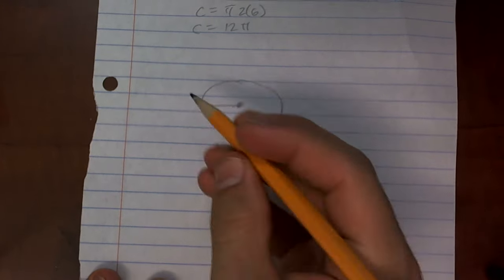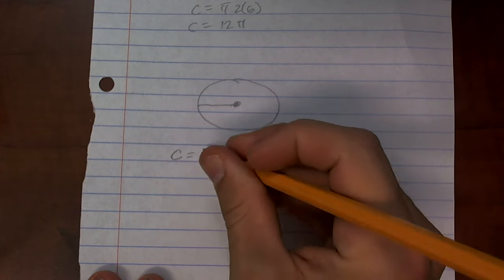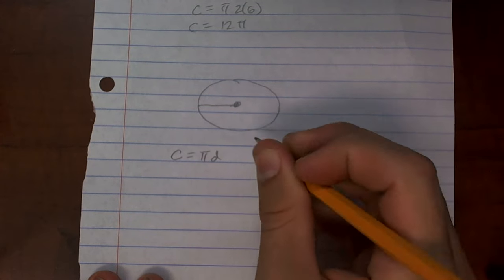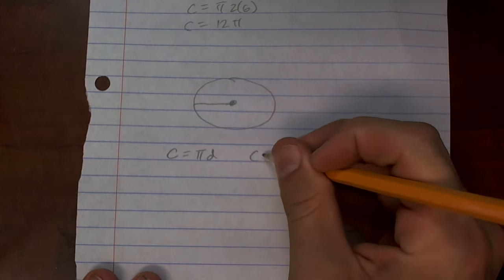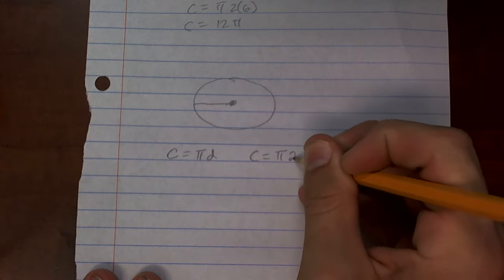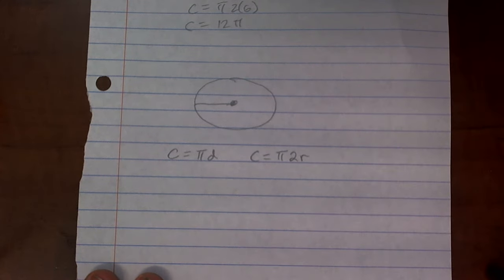So the two things we looked at was we said, all right, we know that circumference is pi times diameter, or you could say that circumference is pi times 2 radius, right?